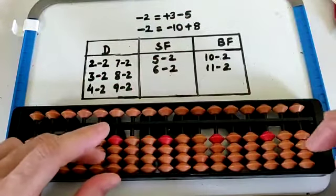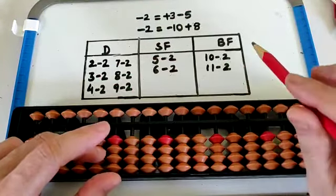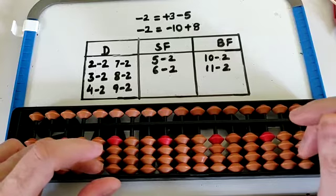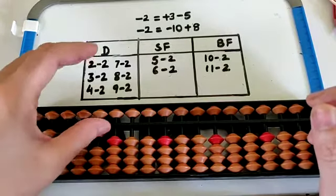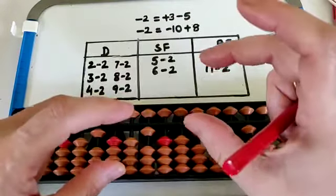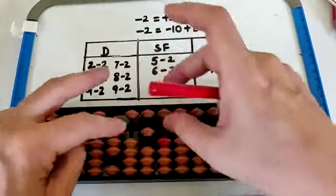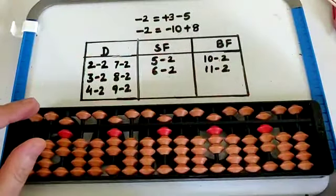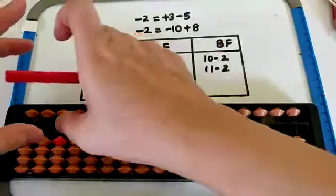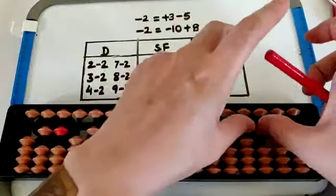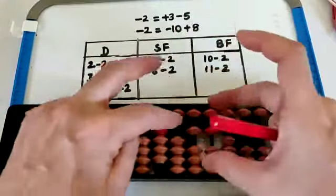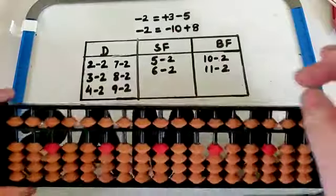We have checked the possibilities — 10 minus 2 and 11 minus 2 mein big friend use hota hai. Now set 10 on all the red bead pointers with the left hand thumb. Minus 2 — minus 10 plus 8, that is 8. Tilt, flat, and clear. Now set 11 on all the red bead pointers. Minus 2 — again it will be minus 10 plus 8, that is 9. Tilt, flat, and clear.